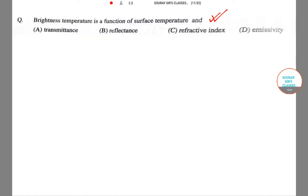Moving on to the next question. This will be the last question we'll be dealing with in today's tutorial. The question says brightness temperature is a function of surface temperature and two other factors. We need to choose the correct ones from options like transmittance, reflectance, refractive index, emissivity, etc.